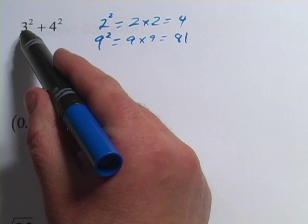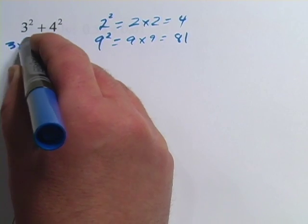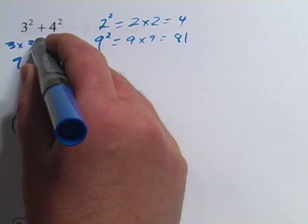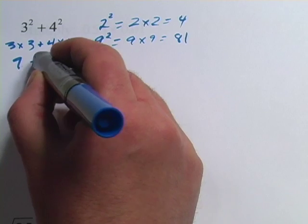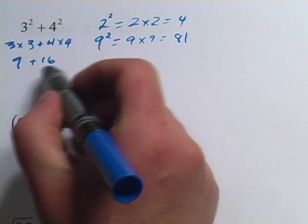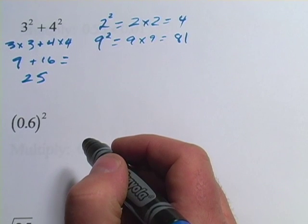So in this problem, we have 3 squared plus 4 squared. Well, 3 squared is 3 times 3, which is 9, plus 4 squared, which is 4 times 4, or 16. 9 plus 16 equals 25. So that is our answer.